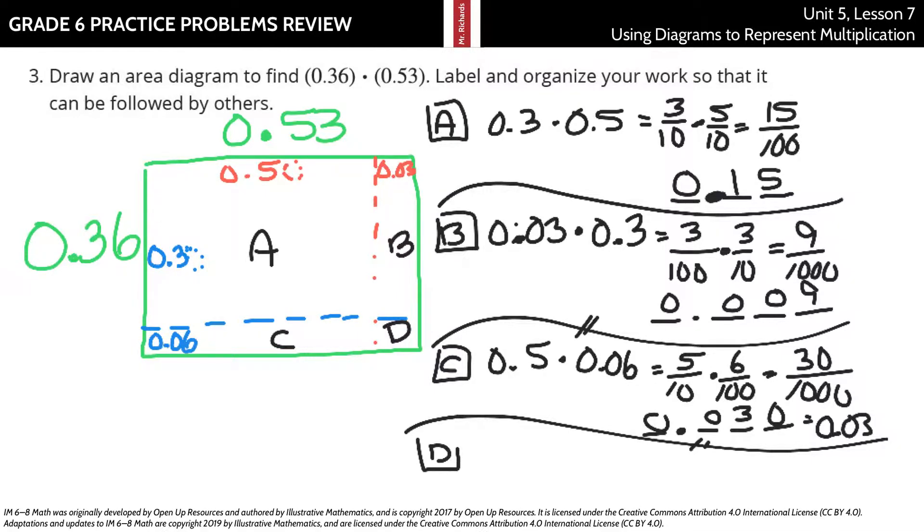And then lastly, D. D is that small piece. We have that 0.03 and 0.06. So 0.03 times 0.06 is 18 ten-thousandths, and then backfill those zeros.